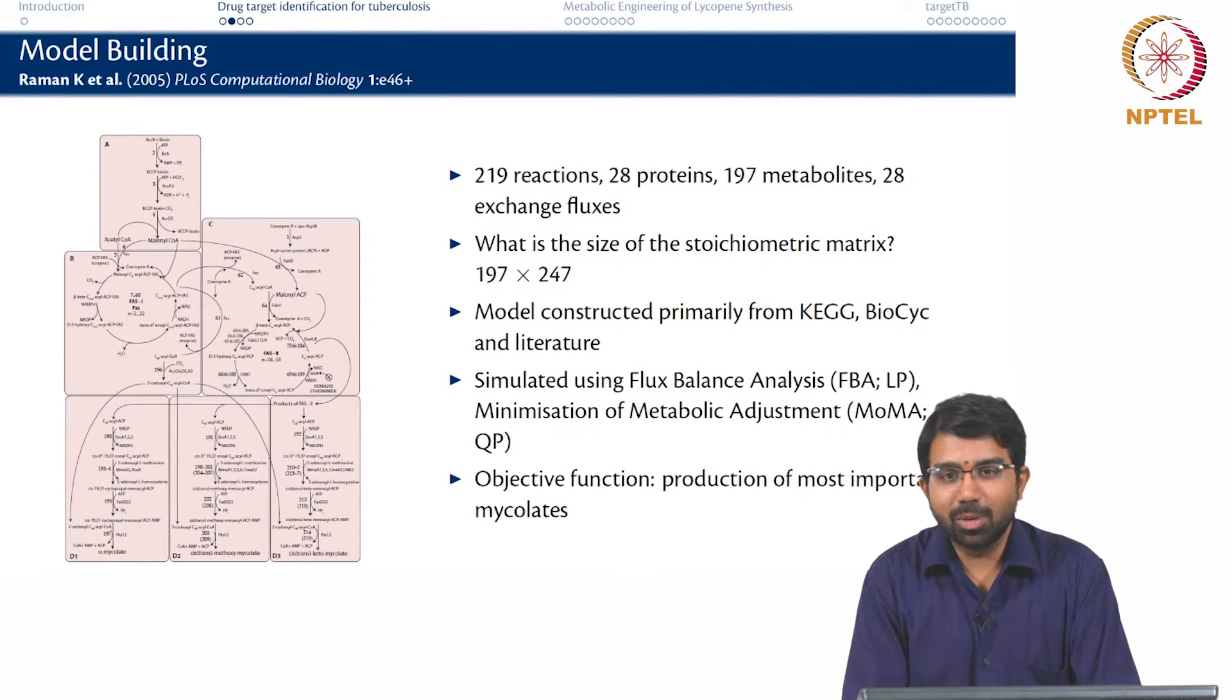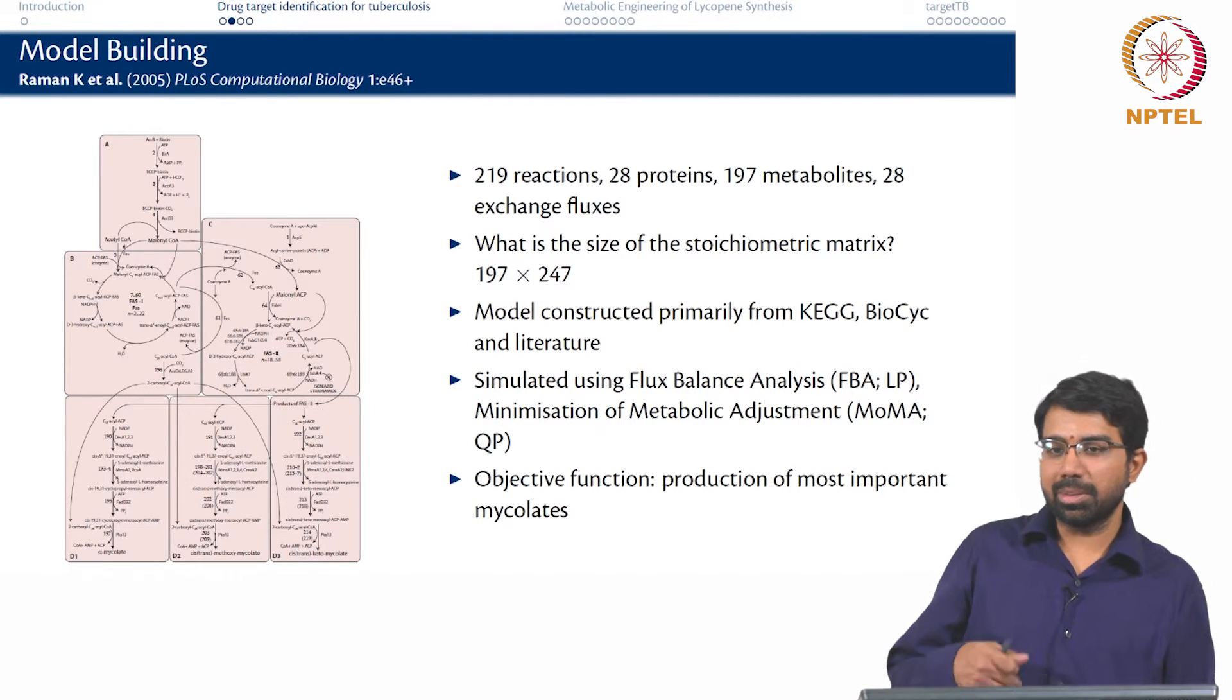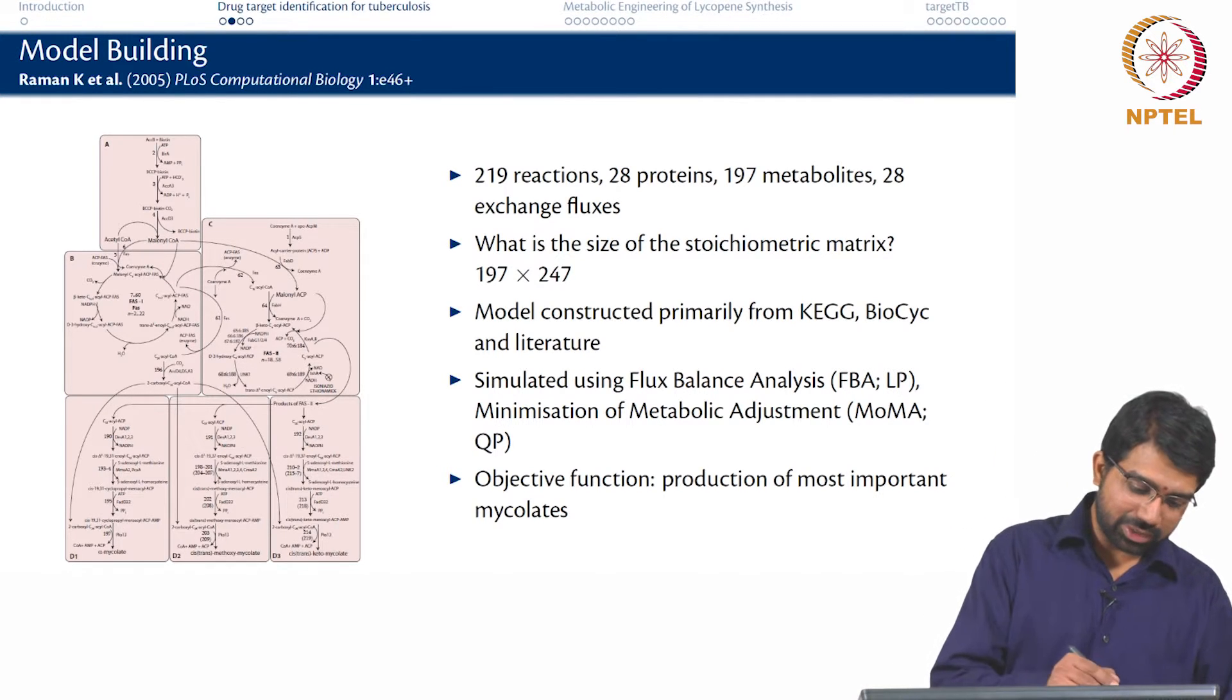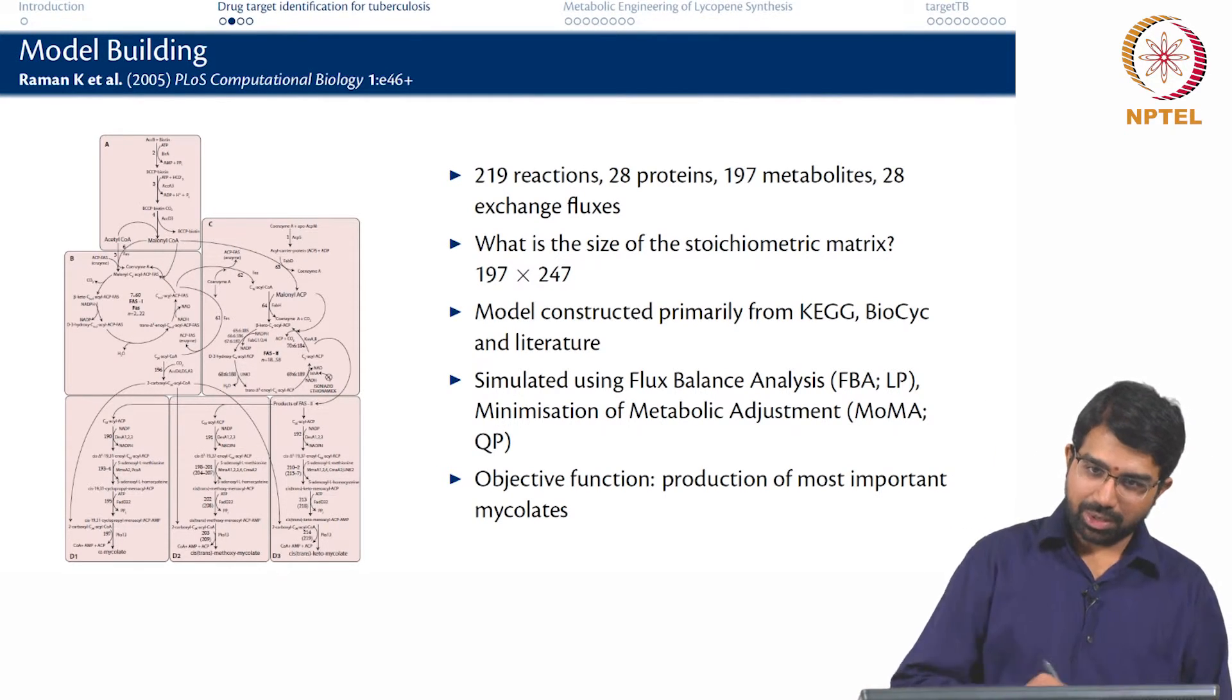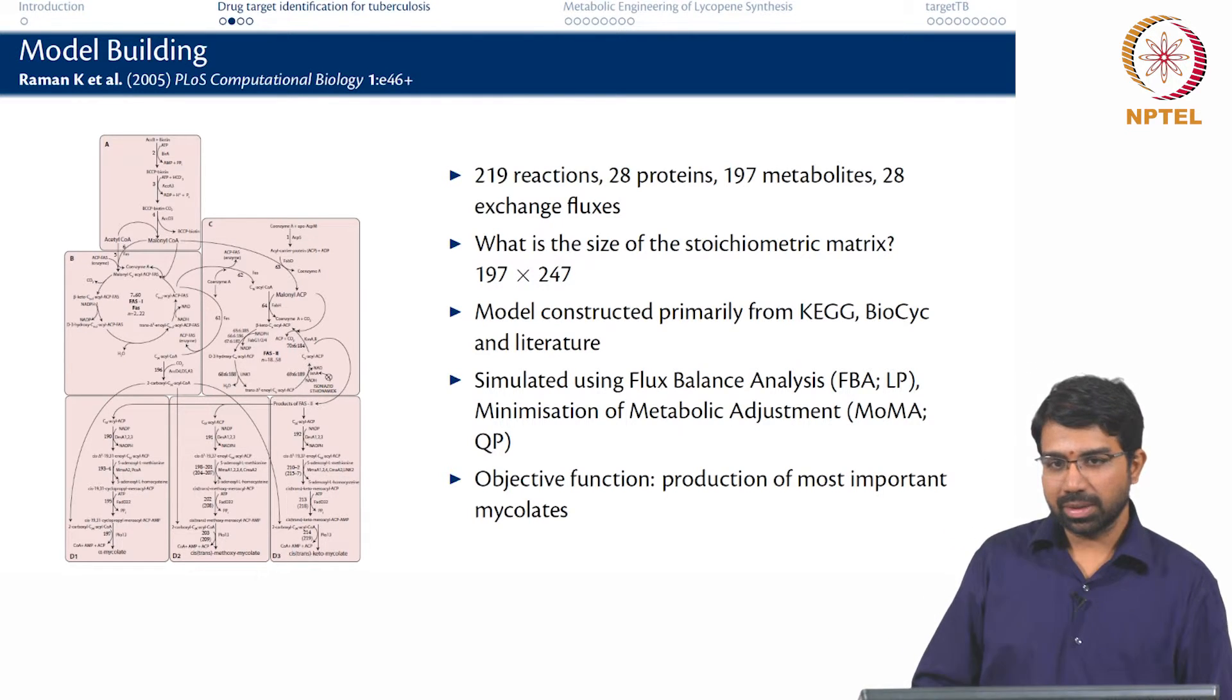What is the objective function for a small model such as this? It is a little trickier. For a normal cell you would say biomass, whereas if I am just modelling a pathway how would I come up with an objective function? You need to figure out what is the goal of this pathway or what is the constraint on this pathway essentially. So we hypothesize that we would try to produce the most important mycolates.